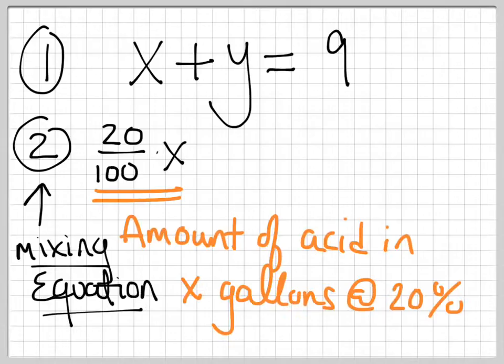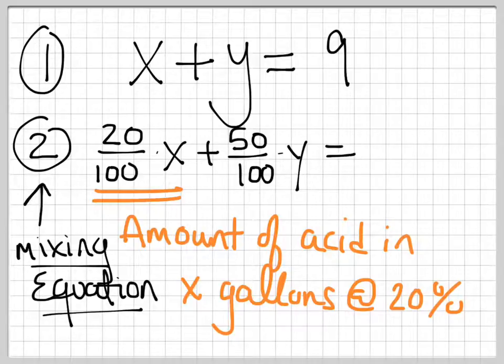When you're given these percentages, if you multiply the percent by the amount, what it does is it extracts just the acid, and that's really all we care about here is how much acid you would have at the end. And so we had 50% acid. 50% is 50 over 100 times y. That's the amount of acid in y gallons at 50%. And what we want are 9 gallons at 30%. So we take 30%, which is 30 over 100, and multiply it by 9.